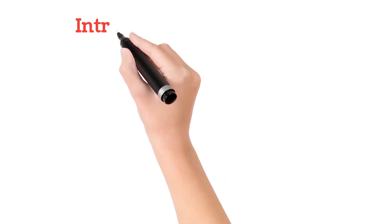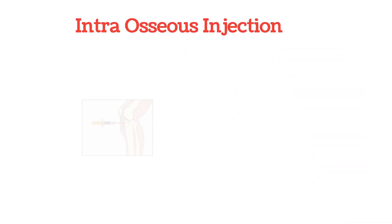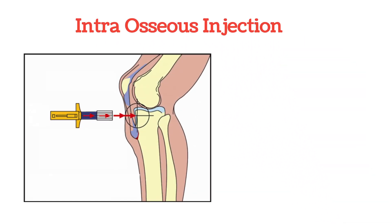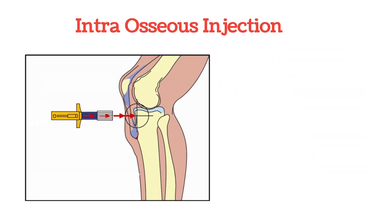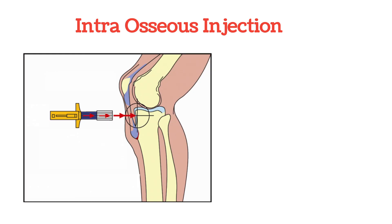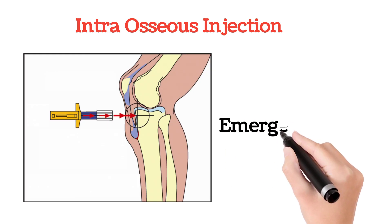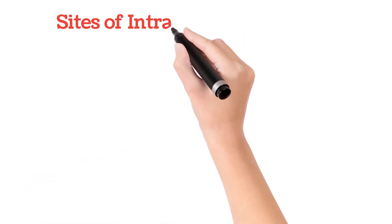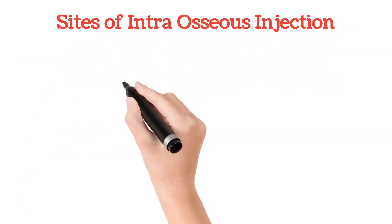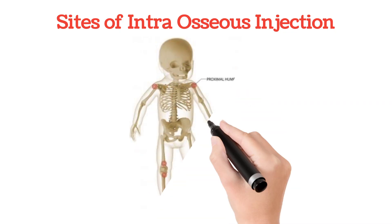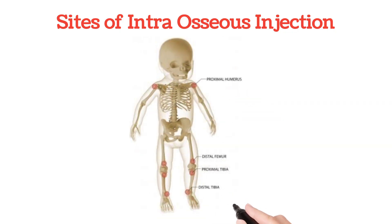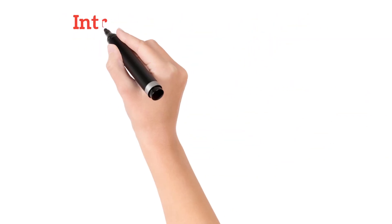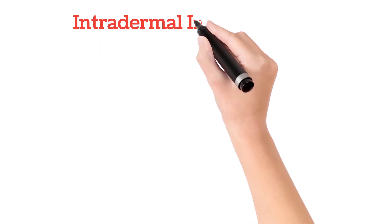Next comes the intraosseous injection. In this, we inject the medicine into the bone marrow. It is given very rarely, only in emergency conditions. It is given in the lower leg bones, thigh bones, and upper arm bones.